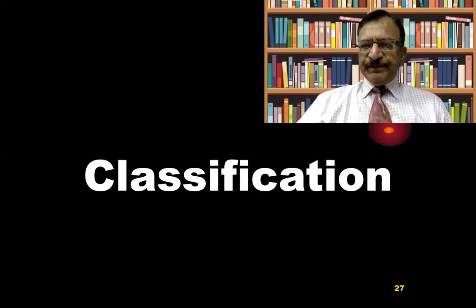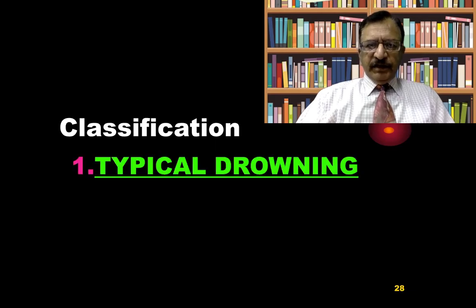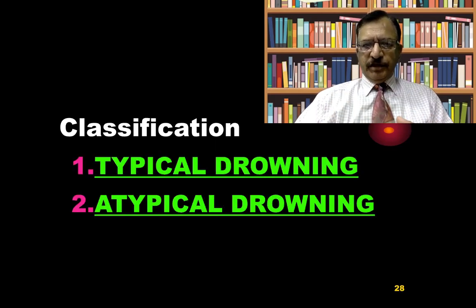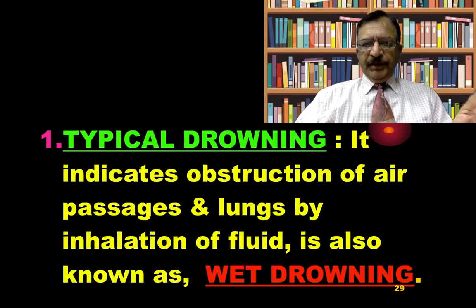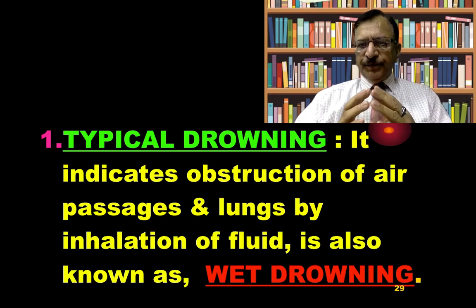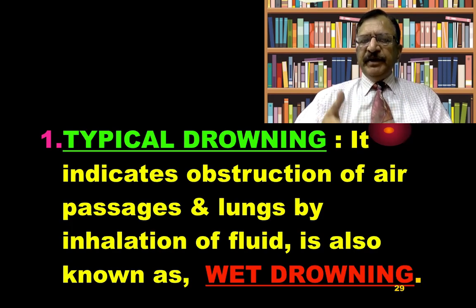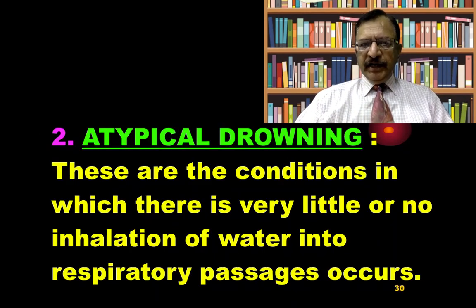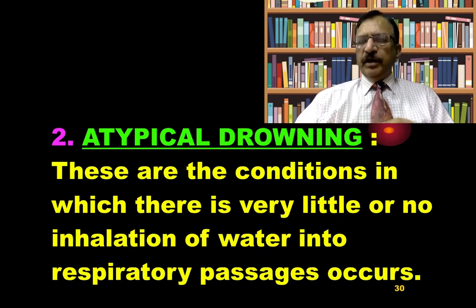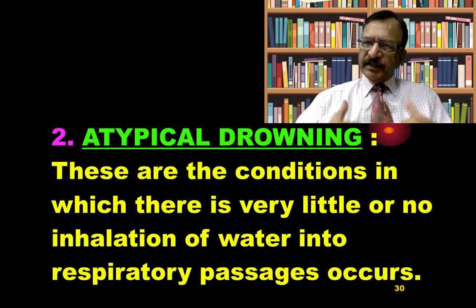Regarding classification, there are two major types: typical drowning and atypical drowning. Typical drowning, also known as wet drowning, indicates that obstruction of the air passages is by means of inhalation of fluid — water or fluid actually enters the respiratory passages. In atypical drowning, there is very little or even no inhalation of water or fluid into the respiratory passages.